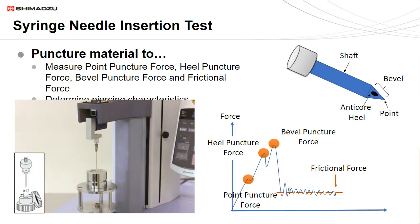This example shows the needle insertion test. In this test, a needle punctures a material stretched over a hollow cavity and continues through the material until the shaft is fully inserted. We get multiple peaks attributed to the different facets of the needle: a localized peak from when the point first penetrates — the point puncture force — another peak as the heel passes through — the heel puncture force — and a third peak from when the end of the bevel punctures the material — the bevel puncture force. Finally, we see oscillations of force attributed to frictional forces between the shaft and the material. This test is used to evaluate the force required to pierce a vial cap, films, and personal protective equipment, or for development of bevel profiles to improve patient comfort.